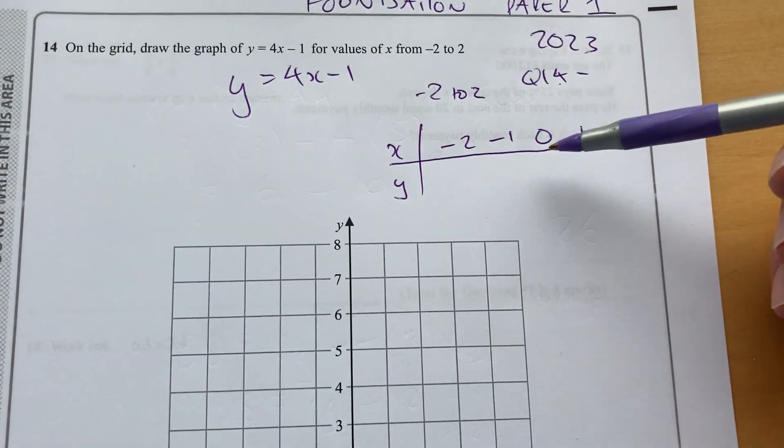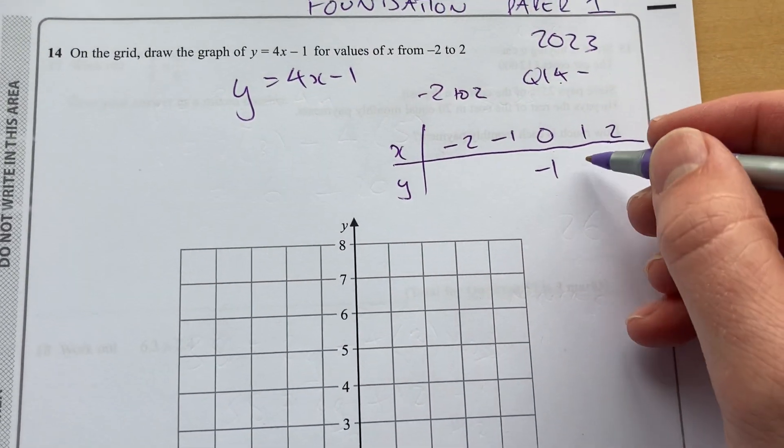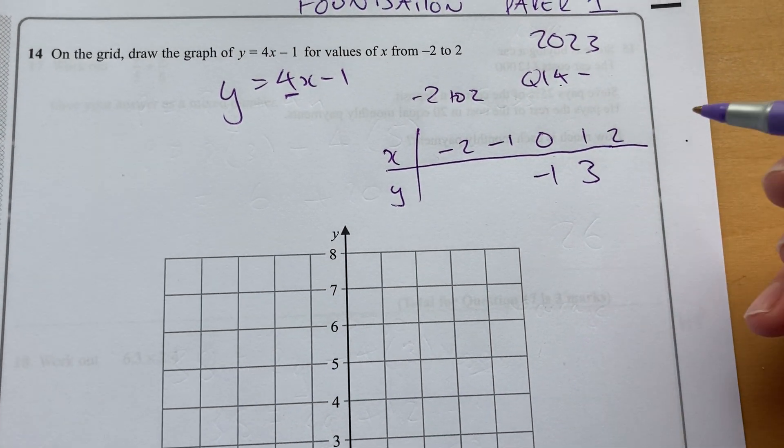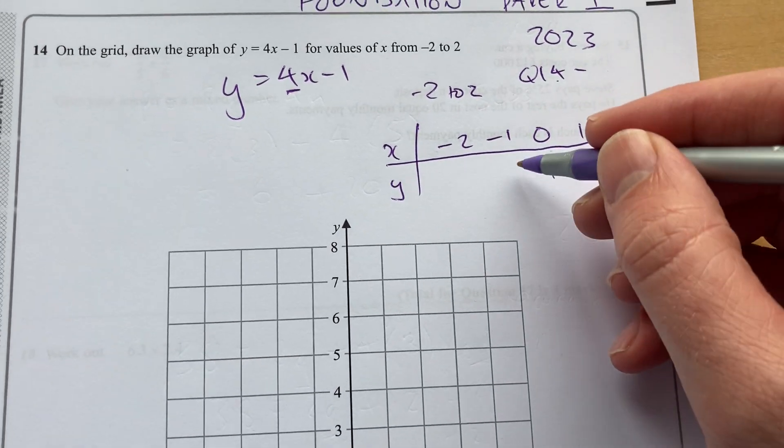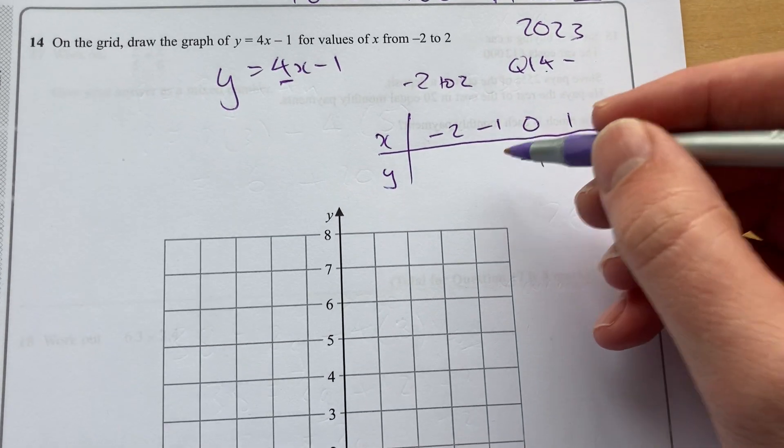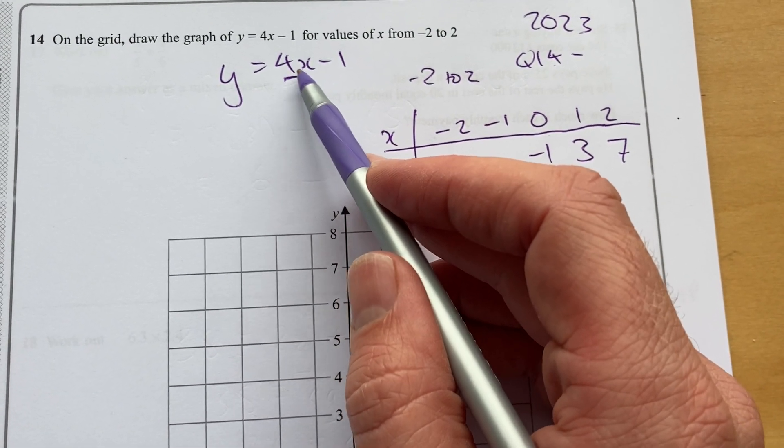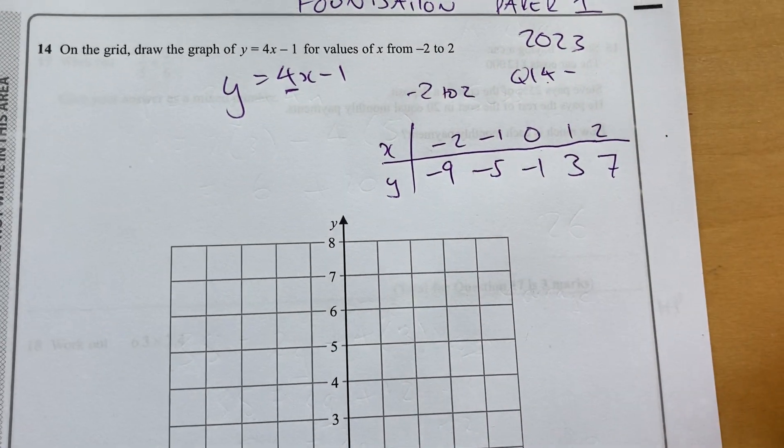Start with the easiest ones. When x is 0, y will be minus 1. When x is 1, y will be 3. It's going up in 4s if you know your nth term. When x is 2, it'll be 7. Each of those is 4. So we're going to be going down by 4 here. So I'm expecting minus 5. Put minus 1 into there. Minus 1 times 4 is minus 4. Minus 1 will be minus 5, minus 9 there.